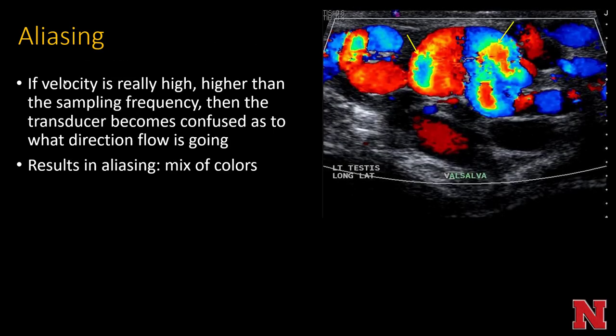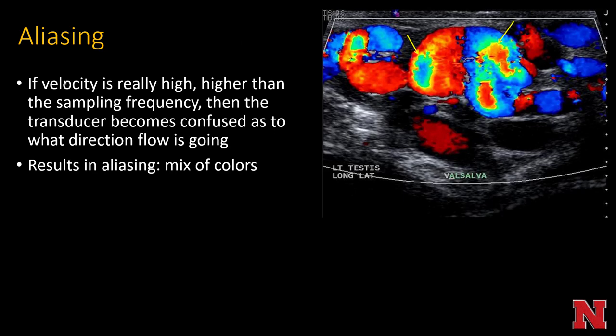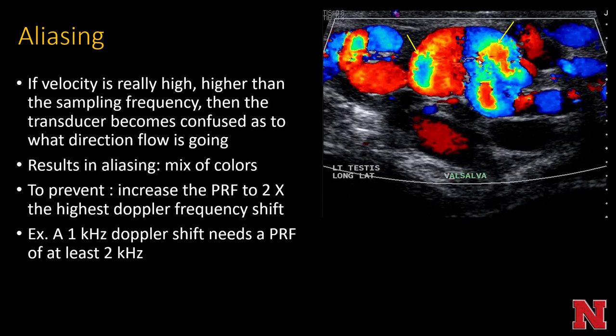The best way to reduce aliasing is to increase the PRF. Aliasing is illustrated here — if velocity is very high, higher than the sampling frequency, the transducer becomes confused about which direction the flow is going, resulting in a mixing of colors. Instead of red or blue, you'll get yellow or green, which is a sign of very high velocity. To prevent this, you must increase your pulse repetition frequency to at least two times the highest Doppler frequency shift — for example, a 1 kHz Doppler shift requires a PRF of at least 2 kHz.